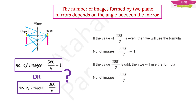The main point to understand is: if the value of 360°/θ is even, then use the formula — number of images = 360°/θ − 1. If 360°/θ is odd, then number of images = 360°/θ as it is. I will discuss this again while solving problems, so stay tuned.